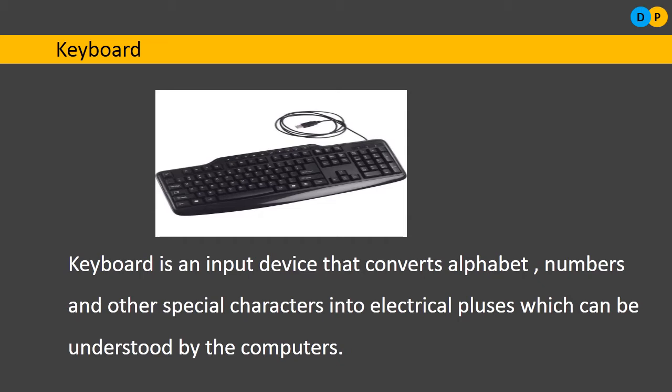A keyboard is an input device that converts alphabets, numbers, and special characters into electrical pulses. As soon as you click on a particular key, that key is actually converted into a sequence of zeros and ones — referred to as electrical pulses — which the computer can understand. The computer cannot understand human language; it can only understand these sequences of zeros and ones, which are nothing but bits.